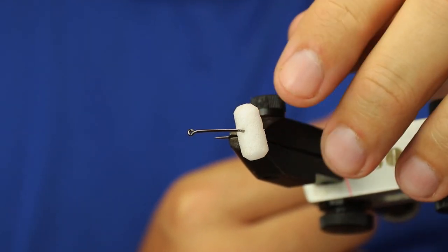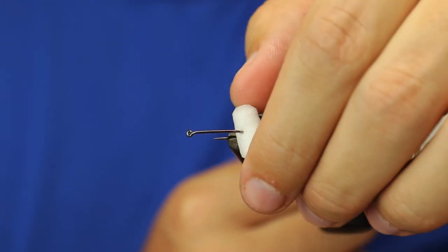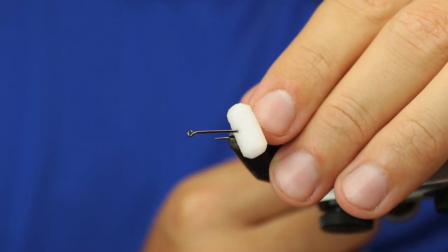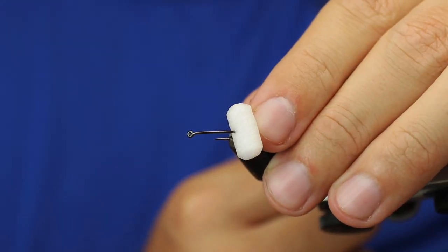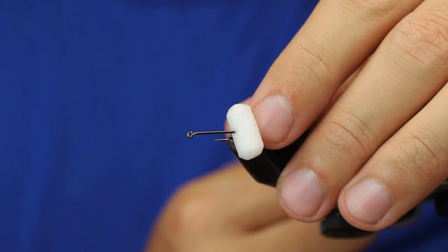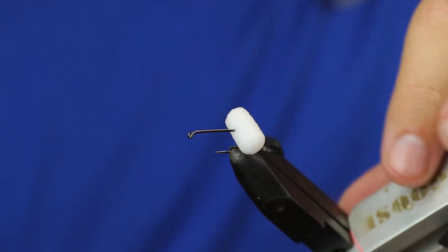You can see that the foam is running centrally to the shank of the hook and about halfway down. I'm going to come in with the thread.